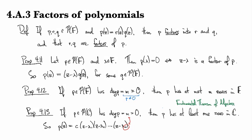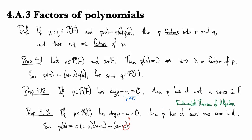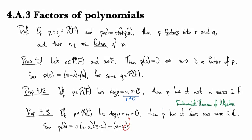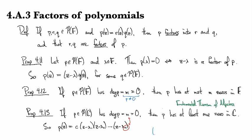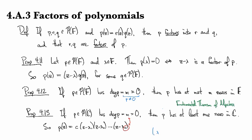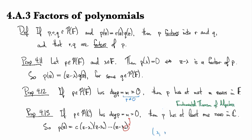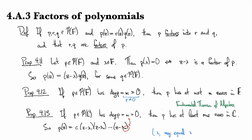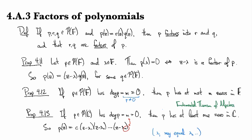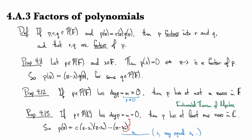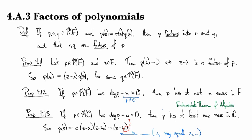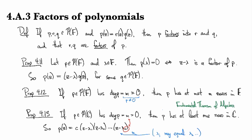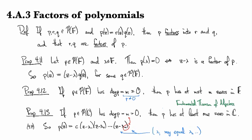Counting multiplicity, so they might not all be distinct. Maybe I should—yeah, let me write that down. So these are not necessarily distinct roots that we have right here. So this one is the content of what the book calls 4.14.